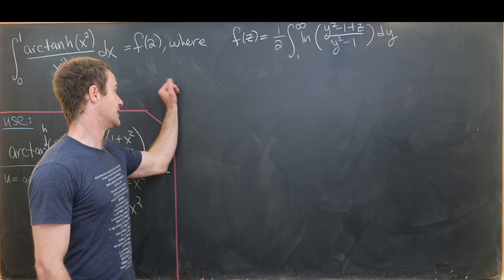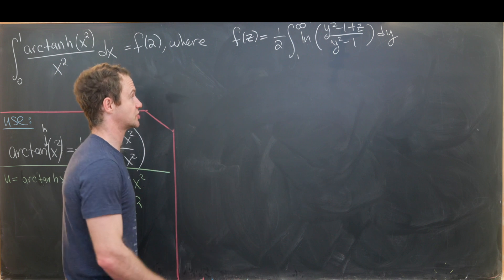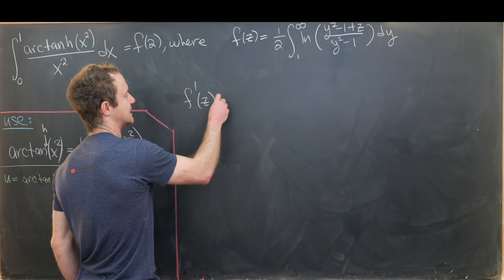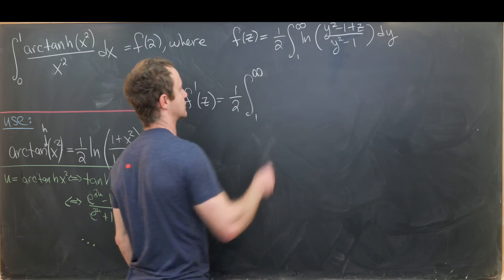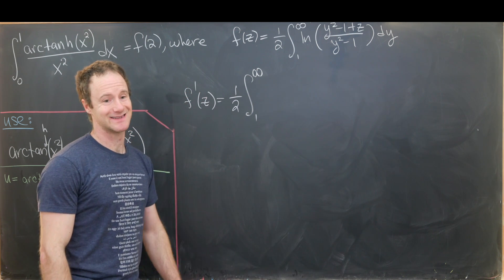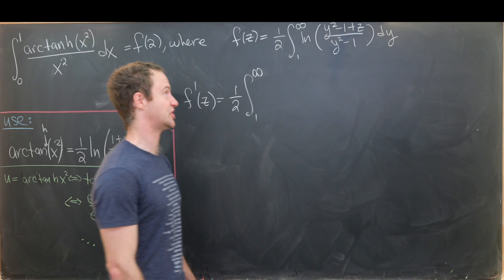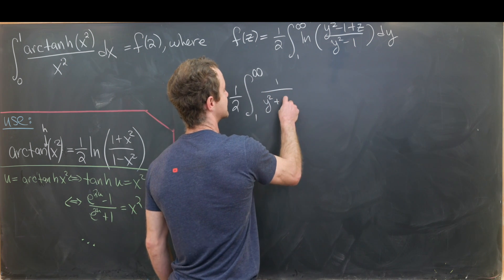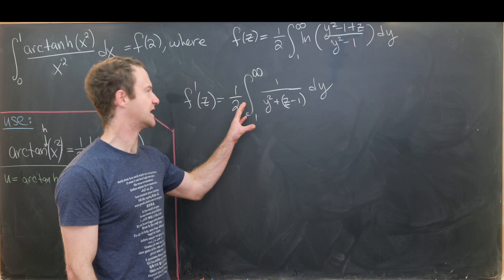To determine f, we take the derivative with respect to z. Differentiating under the integral sign — a standard chain rule application — gives f′(z) = one half times the integral from 1 to infinity of 1/(y² + z − 1) dy. We can now factor (z − 1) out of the denominator to set up the next step.